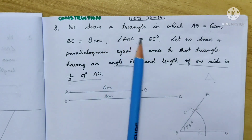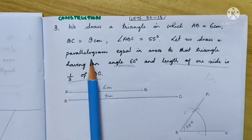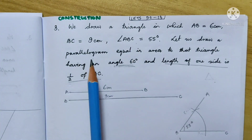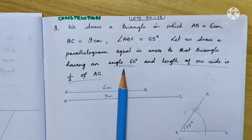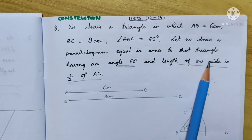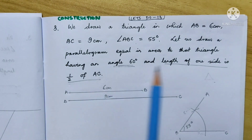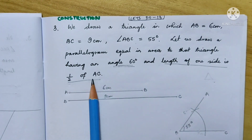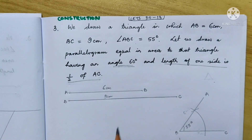Using these given measurements, you have to first make the triangle. After making the triangle, you will have to make a parallelogram equal in area to that triangle. When making the parallelogram, you are given the angle and one more condition: the length of one side is half of AC. The whole point of the diagram depends on this condition, and as I draw the diagram you will come to understand why.